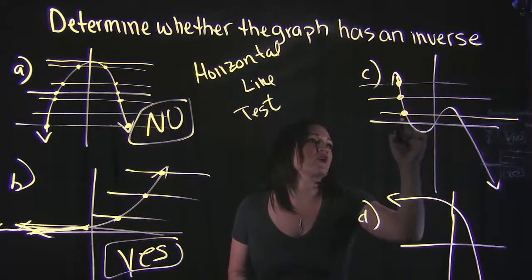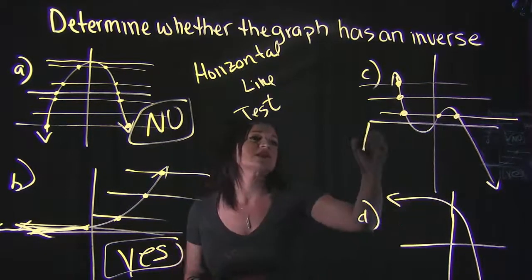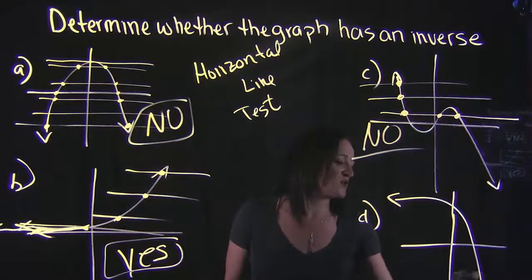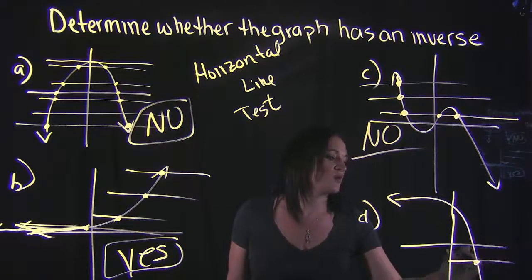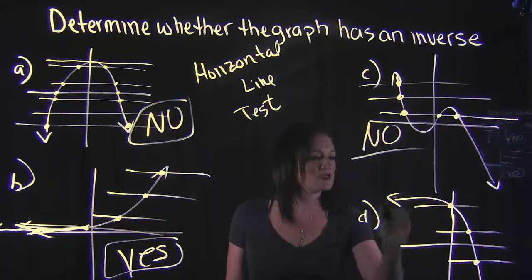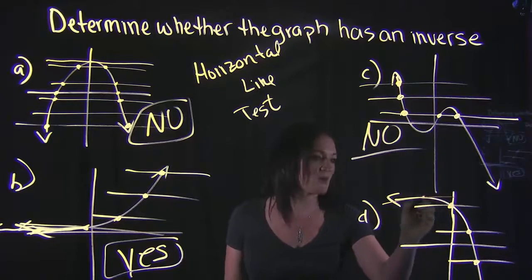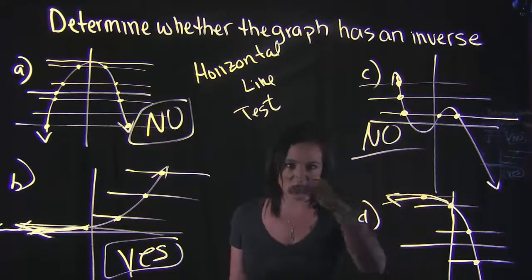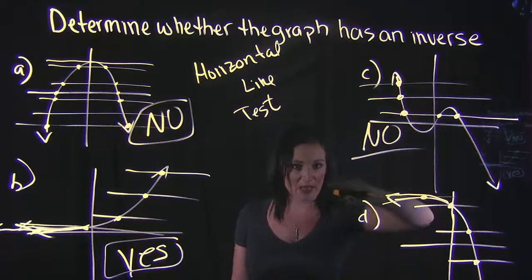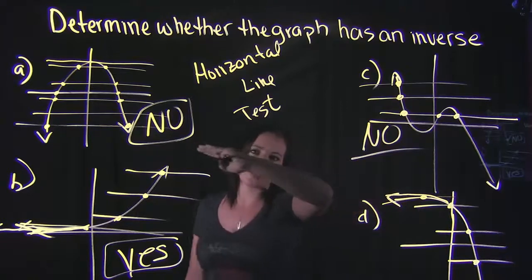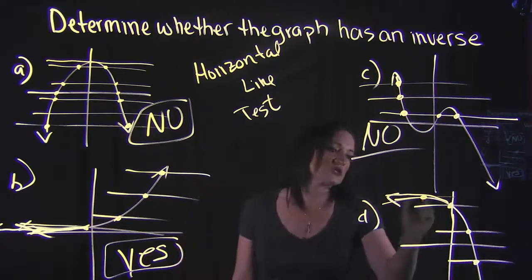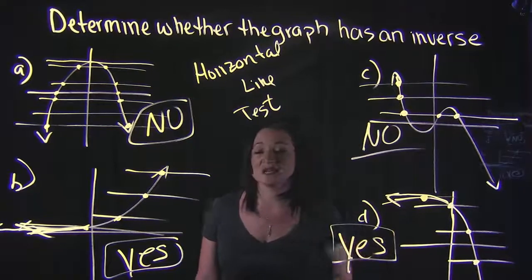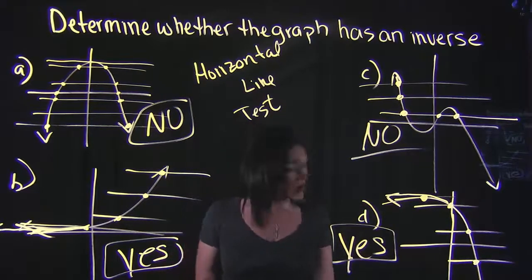Taking a look at Example C: it crosses at one point, one point, but then down here it crosses one, two, three points — that's an automatic no for that one. Looking at Example D: one point, one point, one point. Example D is just like Example B — even though this line looks like it's going steady toward a straight line, it's not. It's little by little working its way up, so it's still only crossing at one point. Example D is a yes.